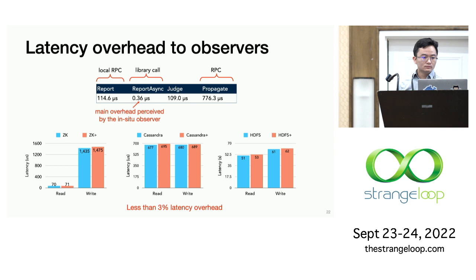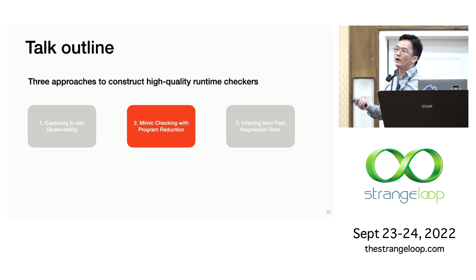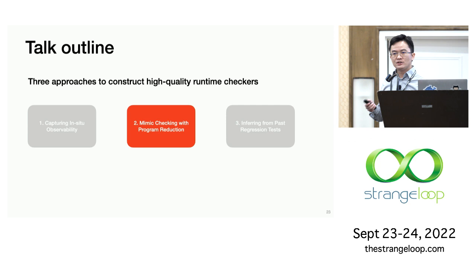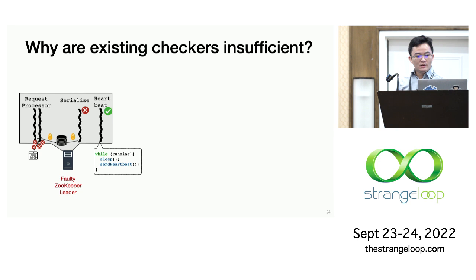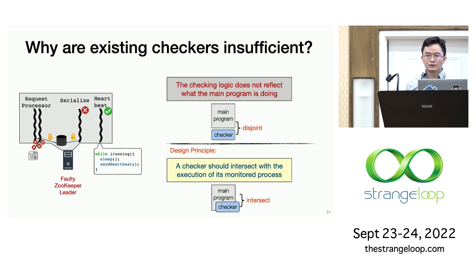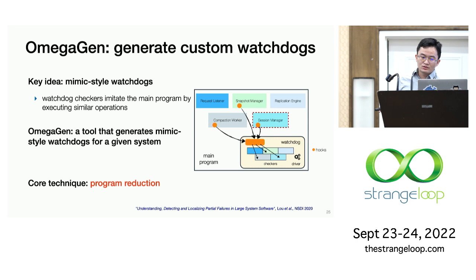Now Panorama's approach relies on other weaknesses in a large system to detect complex failures. We take a step back and explore how we can enhance a component's self-checking ability. Looking at the code of some existing detectors, we find a common problem: their checking logic is actually disjoint with the program's logic, so they cannot really accurately reflect the main program's status. We can summarize this lesson as an intersection principle: if you want to design an effective detector, you should ensure its checking logic intersects with the monitored program's.